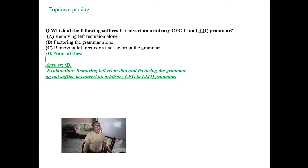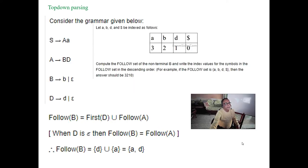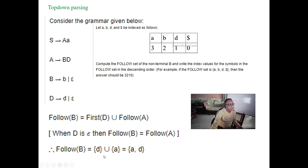Which of the following suffices to convert an arbitrary CFG to LL(1) grammar — removing left recursion and factoring, but that has been covered. This is an important question: given a grammar, calculate FOLLOW of B. FOLLOW of A is definitely dollar. FOLLOW of B must be FIRST of D because B is followed by D; and since D can go to epsilon, FOLLOW of B also includes FOLLOW of A. So FOLLOW of B equals FIRST of D union FOLLOW of A. That is how FOLLOW is calculated.